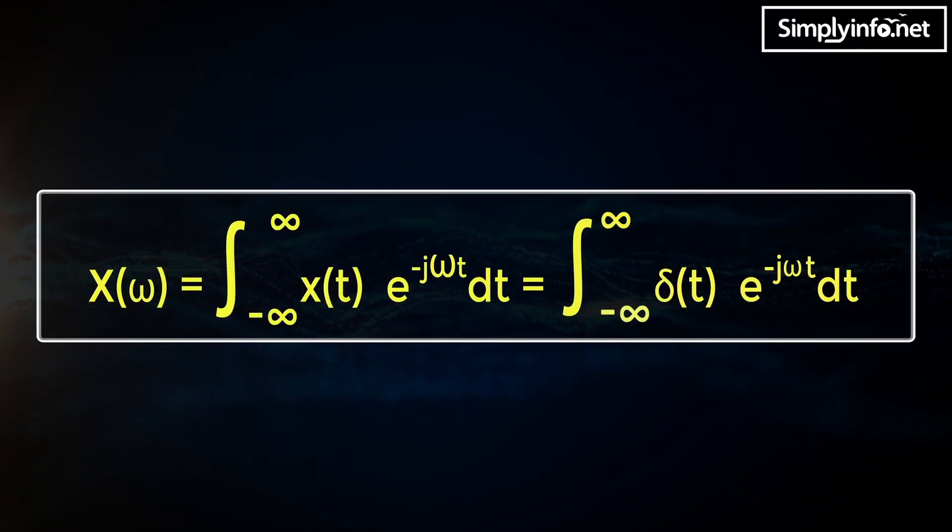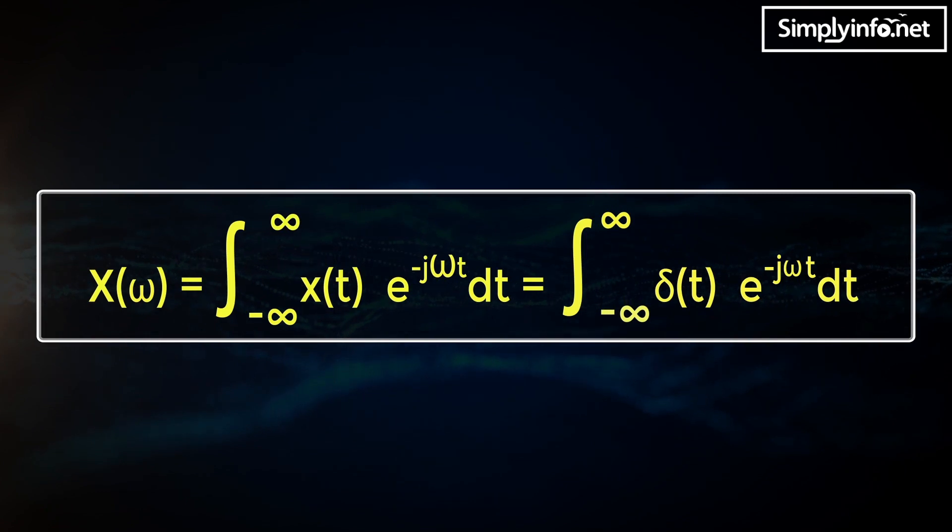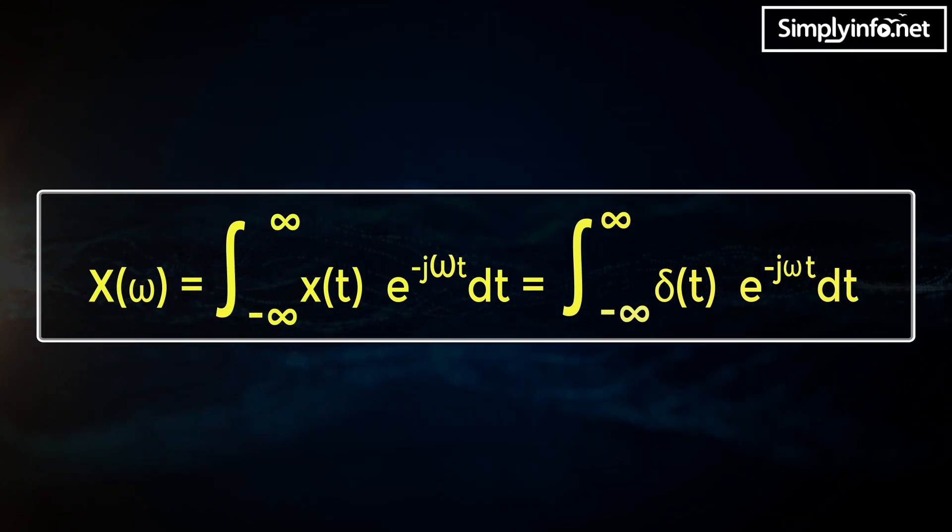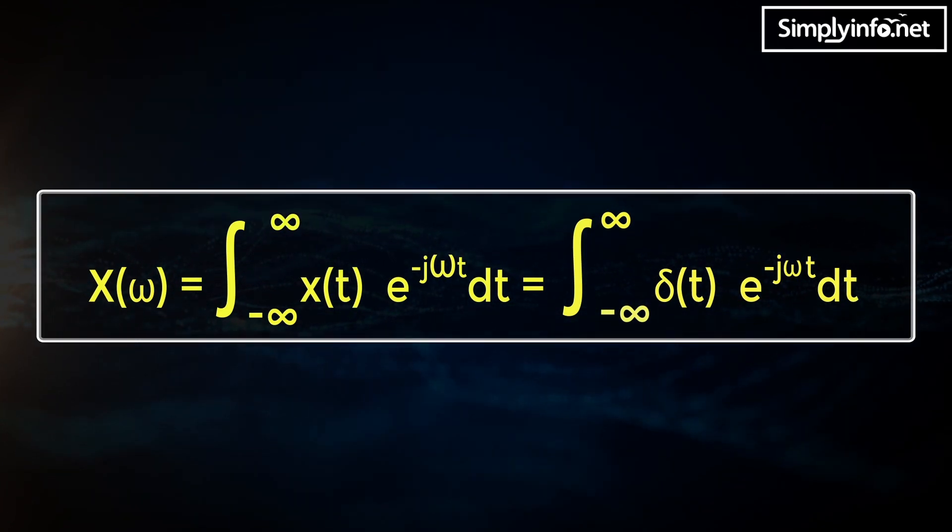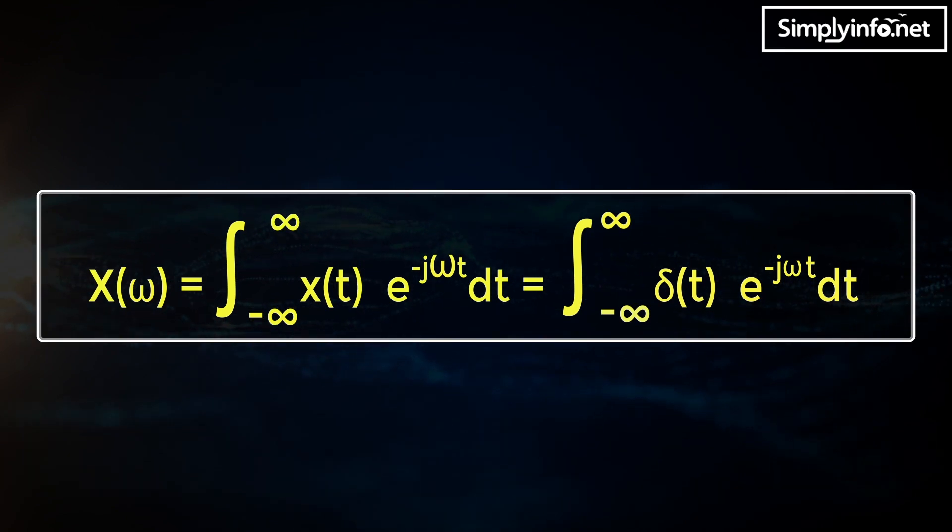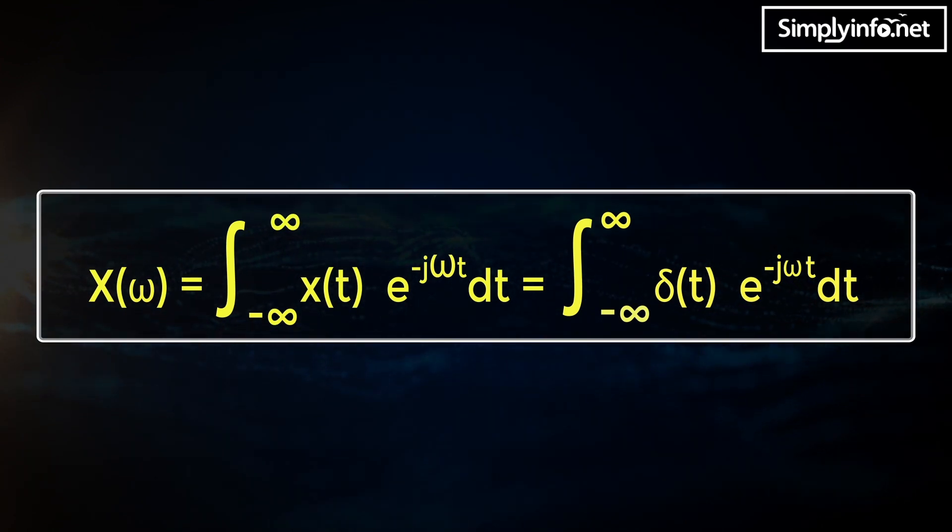Then x of omega equals the integral from minus infinity to infinity of x of t times exponential of minus j omega t dt, which equals the integral from minus infinity to infinity of delta of t times exponential of minus j omega t dt.